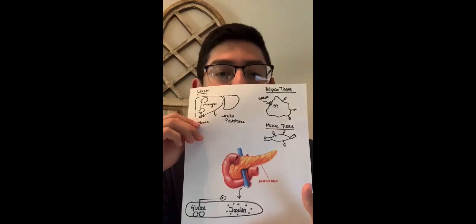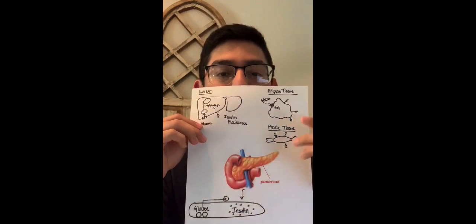Before we talk more about the physiology behind type 2 diabetes, let's talk about what should normally happen in the body. I drew a diagram to help represent what should happen inside the body when there are high levels of glucose. In the middle of the diagram we have the pancreas, which secretes insulin whenever there are high levels of glucose inside the body.